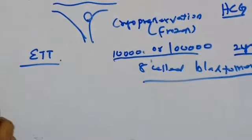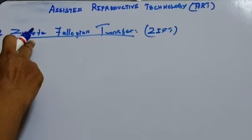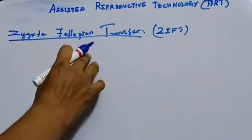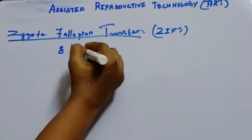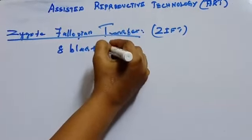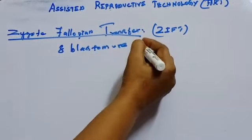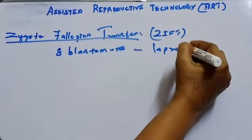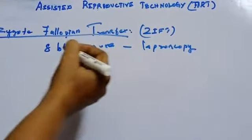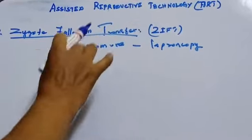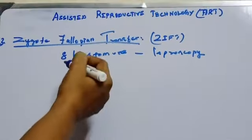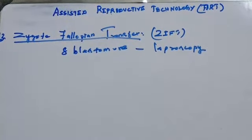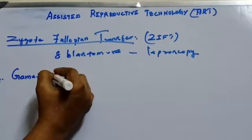The third method is zygote intra-fallopian transfer, or ZIFT. Similar to IVF, the zygote is developed up to the 8-blastomere stage and then transferred into the fallopian tube by laparoscopy. The zygote then continues its natural division, automatically migrates towards the uterus, gets implanted, and starts growing.